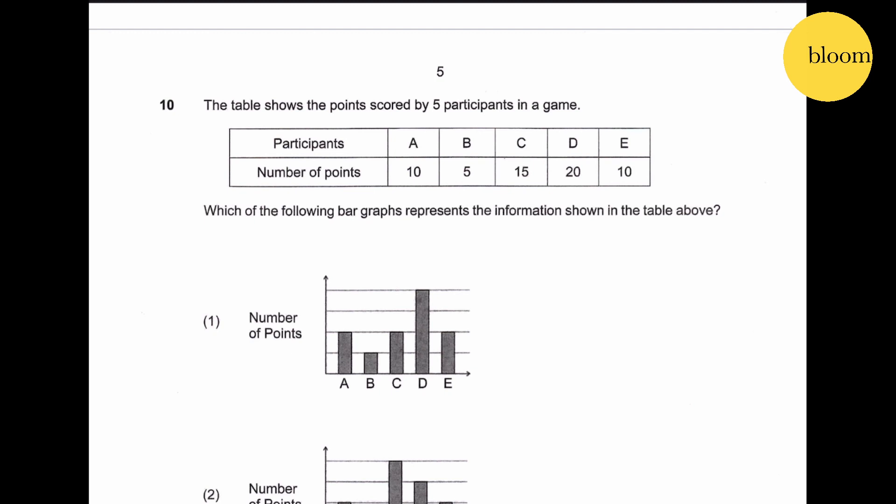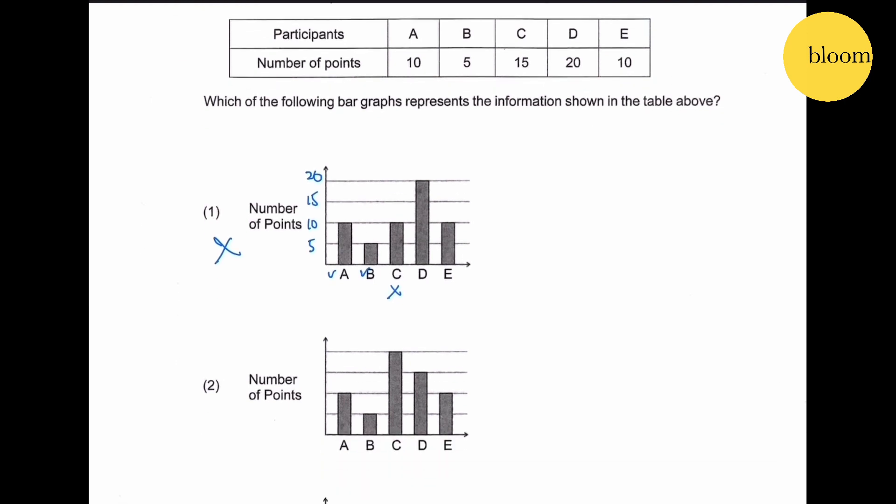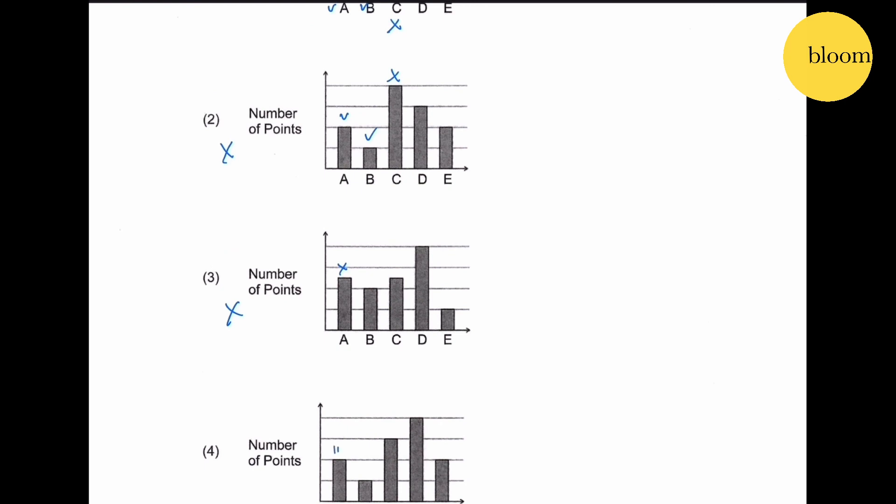Question number 10: the table shows the points scored by five participants in a game. Which of the following bar graphs represent the information shown in the table above? So let's say this is 5, 10, 15, 20 - A is 10 correct, B is 5 correct, C is 15 wrong, so this is not. How about number two - 10 is correct, 5, this is wrong. How about this - this is 10, 5, 15, 20, and 10. Answer is number four.